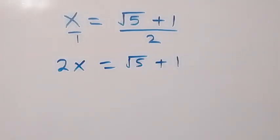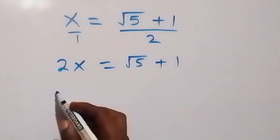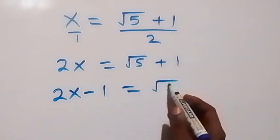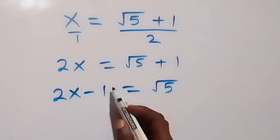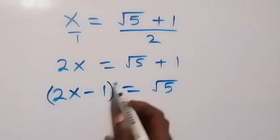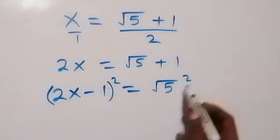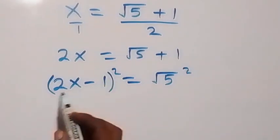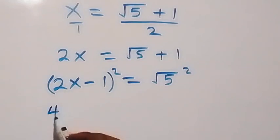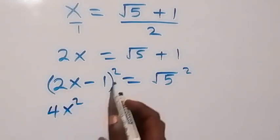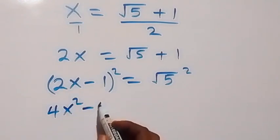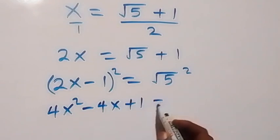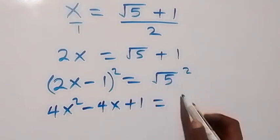Taking 1 to the left side gives 2x minus 1 equals root 5. Now we square both sides. The left side expands as 4x squared minus 4x plus 1, and the right side gives us 5.